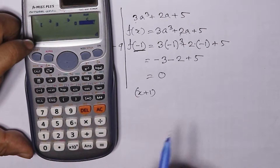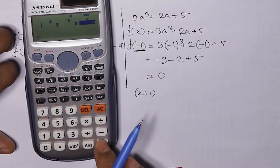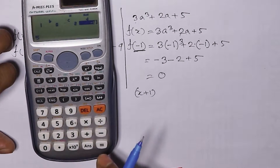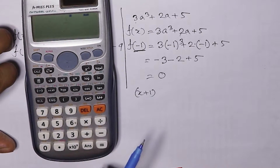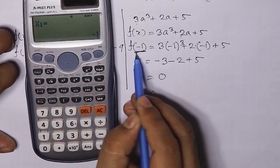We can find the same value as 2 equals. We can find the same value as 2 equals to 5. d equals minus 1.